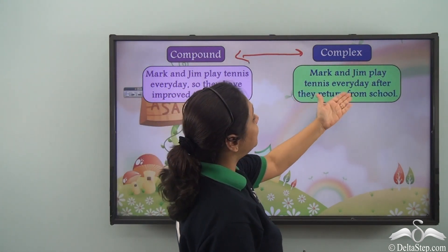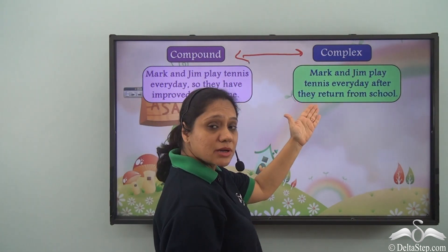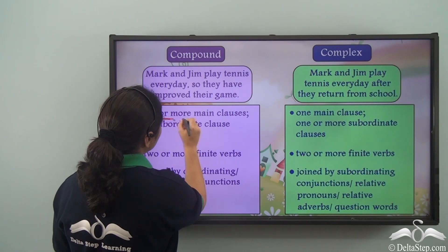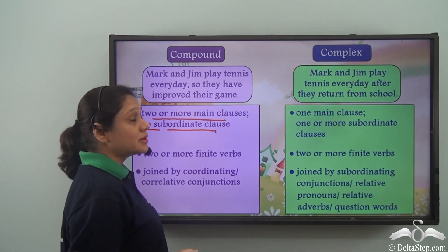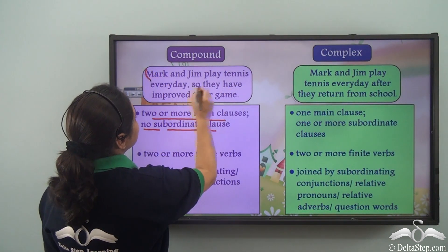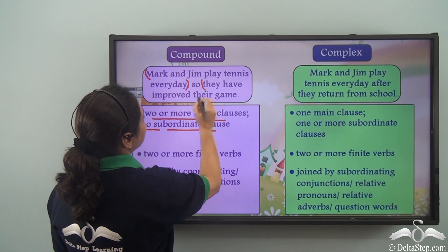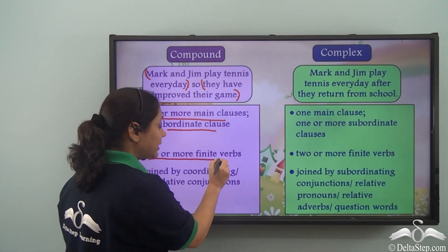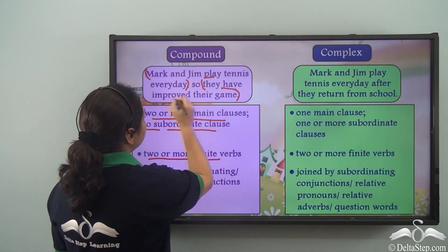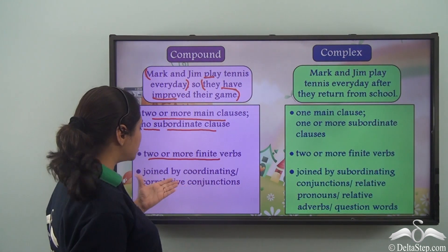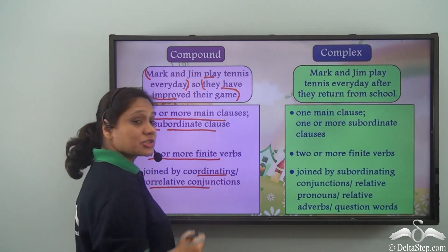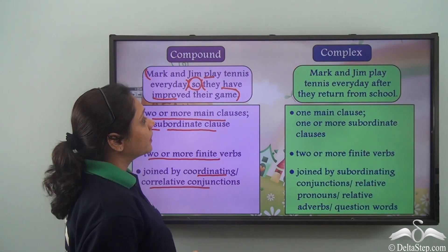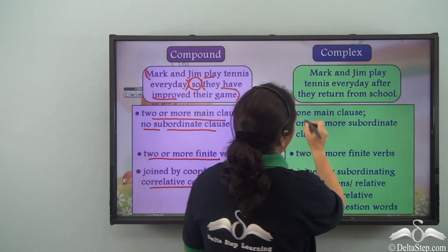And 'Mark and Jim play tennis every day after they return from school' is a complex sentence. A compound sentence is made up of two or more main clauses and no subordinate clause. In our example, both clauses are independent, and it has two or more finite verbs: 'play' and 'have improved.' The clauses are joined by coordinating or correlative conjunctions — in this case, a coordinating conjunction.